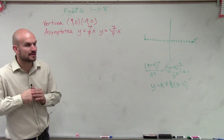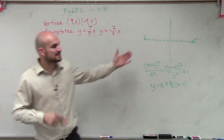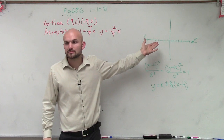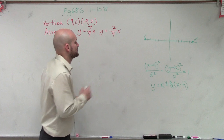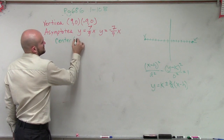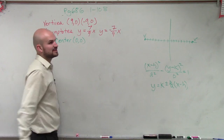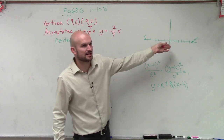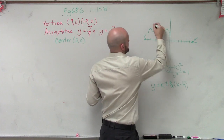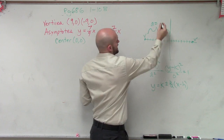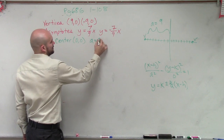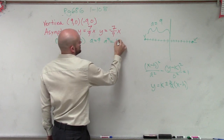So now let's take a look at what we have. Since we know our two vertices, can we figure out what our center is? Our center is (0, 0). Then remember, the distance from the vertices to the center is your a. So we can say a equals 9. Since a equals 9, that means a squared equals 81.